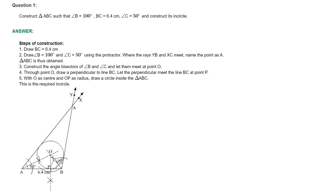Draw BC of 6.4 cm. Draw measure of angle B equal to 100 degrees, so ray BA has to be drawn such that angle B equals 100 degrees. Take measure of angle C equal to 50 degrees using the protractor. Note: the marking shown is wrong — instead of A, mark C at the base. Angle C is equal to 50 degrees. Where rays YB and XC meet, name the point as A. Triangle ABC is thus obtained.